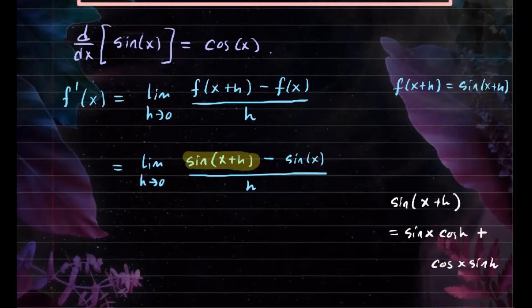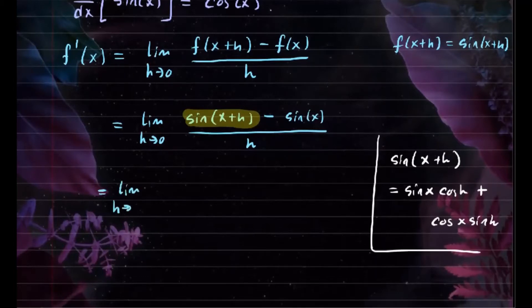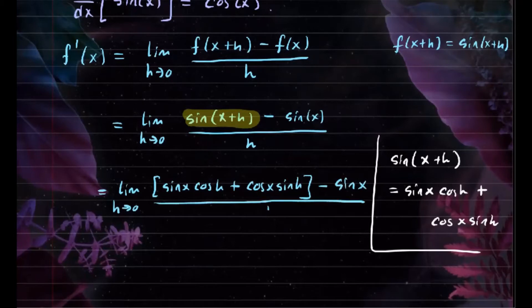If we substitute that in, we obtain the limit as h approaches 0 of sine x cosine h plus cosine x sine h minus sine x, all over h.